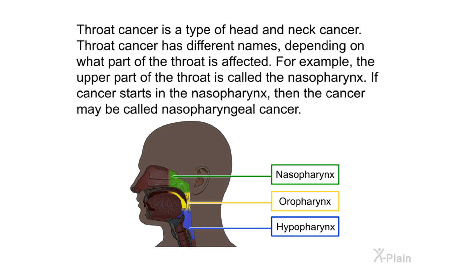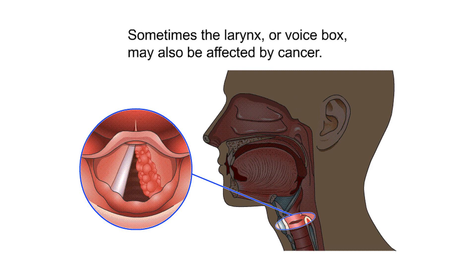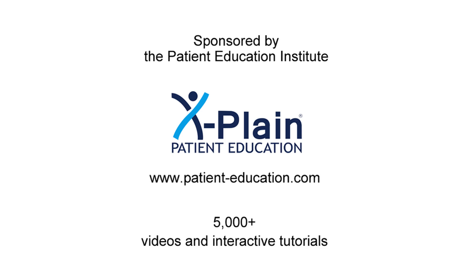Throat cancer is a type of head and neck cancer. It has different names depending on what part of the throat is affected. For example, the upper part of the throat is called the nasopharynx; if cancer starts there, it may be called nasopharyngeal cancer. The larynx, or voice box, may also be affected by cancer.